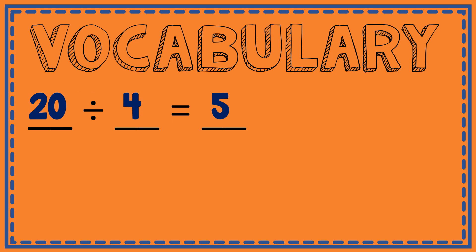Here's my equation and here are the numbers that belong in my equation: 20 divided by 4 equals 5. Now each of these numbers has a name in a division equation. 20 is my dividend — that is my whole group, that's how many I'm going to divide into parts.